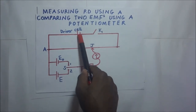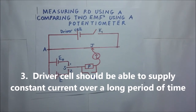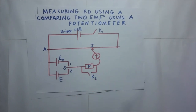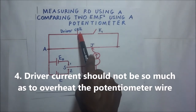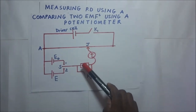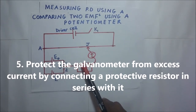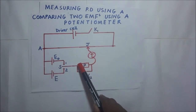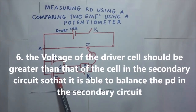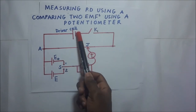The driver cell current should be the kind that can maintain a constant amount of current for a long period of time to ensure stability of results. The driver cell should also not be so large as to overheat the potentiometer wire. Always protect the galvanometer from excess current by putting a protective resistor in series with it. The potential difference of the driver cell should be greater than the potential difference of the cells in the secondary circuit — otherwise, there won't be a balance point.